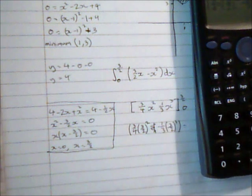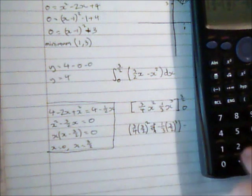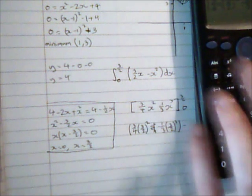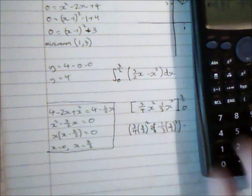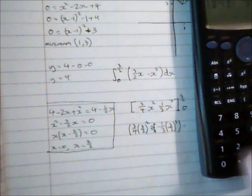So 3 over 4 multiplied by 3 over 2 squared, subtract a third of 3 over 2 cubed.